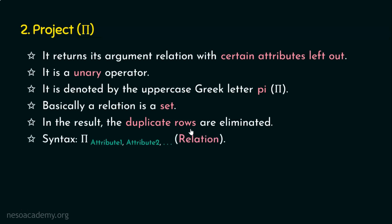Let's see the syntax. The uppercase Greek letter pi is used to denote the project operation. In the subscript, we list only the attributes we want to retrieve. If a relation has ten attributes and we need only five, we list those five: attribute one, attribute two, and so on. Then we specify the relation name. The syntax is: pi subscript (list of required attributes) applied to the relation name.